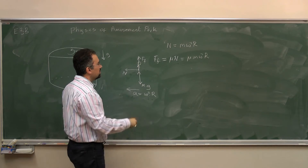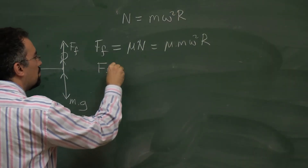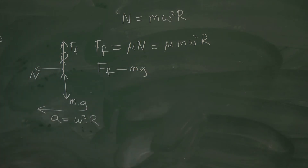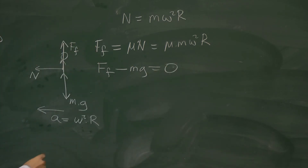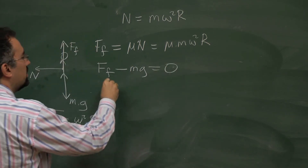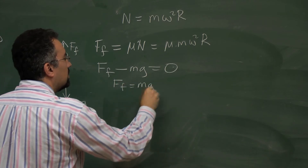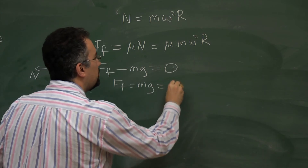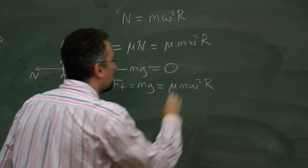Writing the vertical equation: the friction force minus mg equals zero, since we don't want the person falling. So the friction force must equal mg, which gives us mu times m times omega squared times r equals mg.